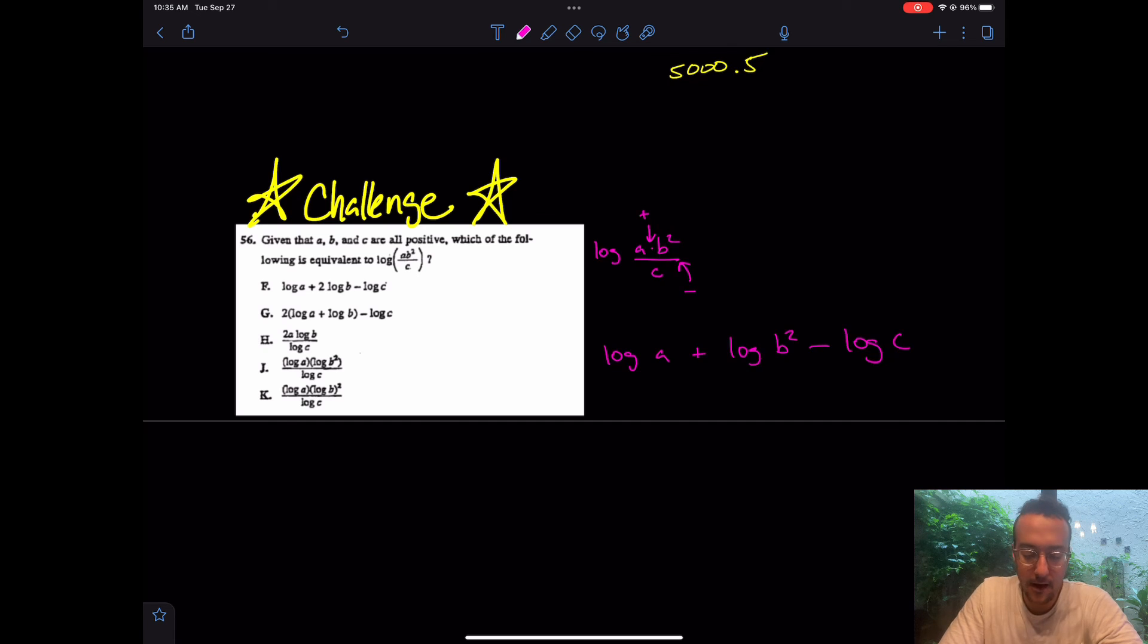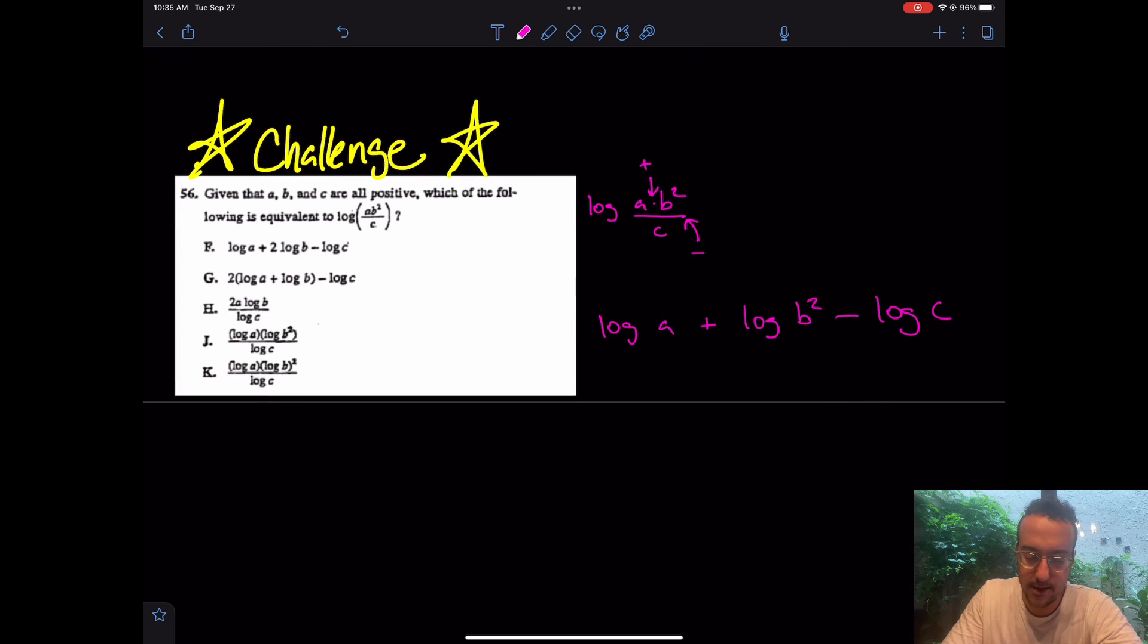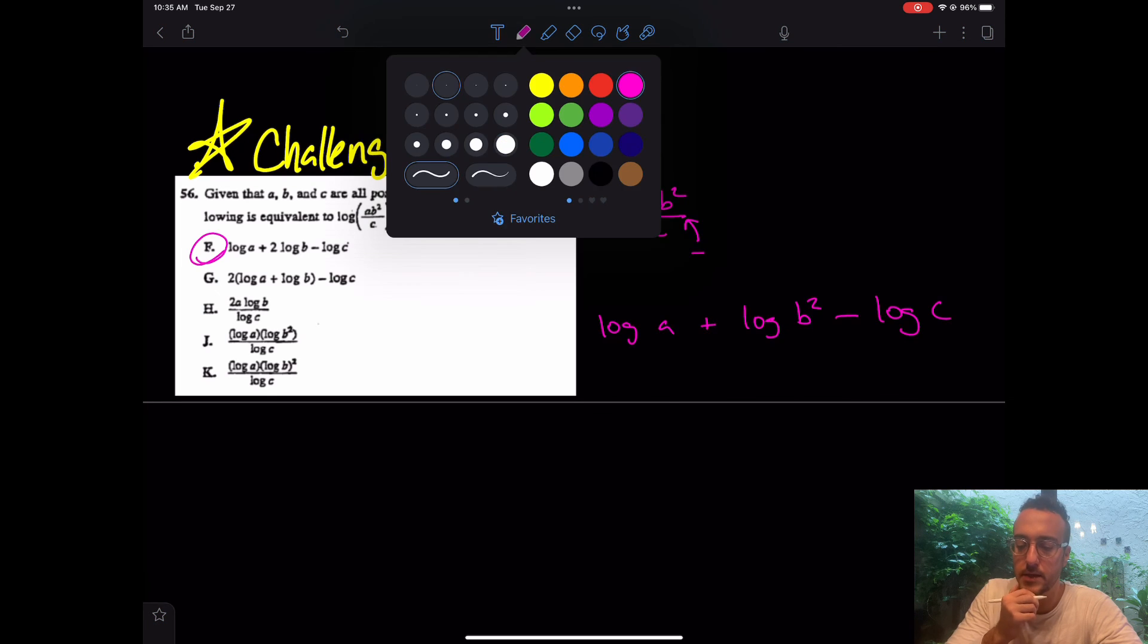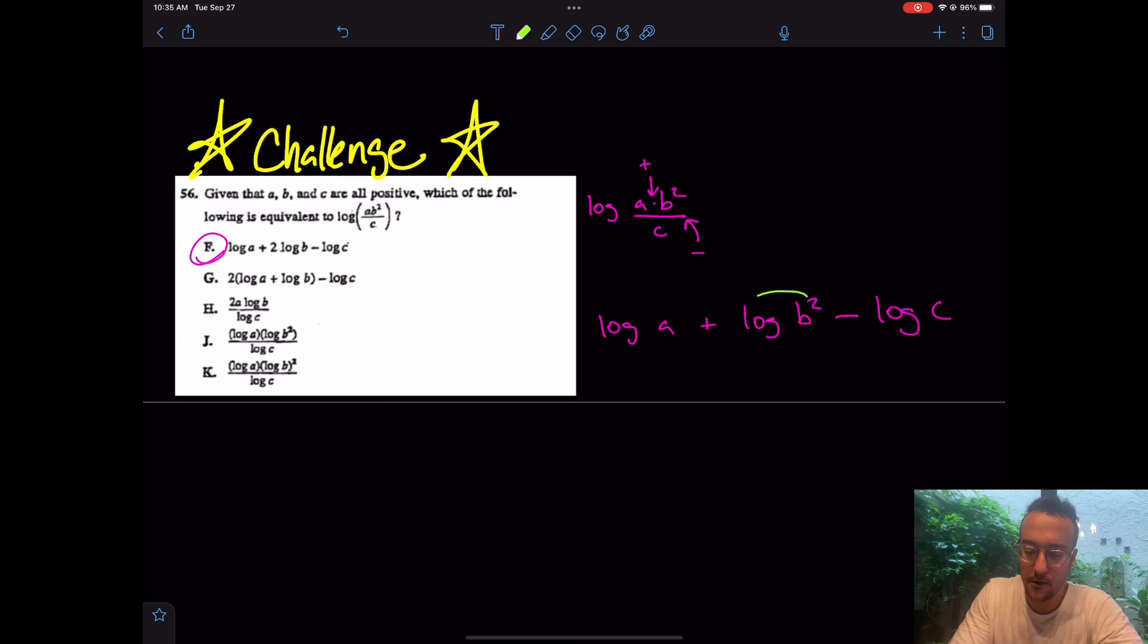And from here, I take a look at the answer choices. And unfortunately, my answer choices don't match up. But I don't panic because I know that I can get this question right. I notice that answer choice F looks really close. The only difference is they pulled that two to the ground floor. Really, I have log of A plus two log of B minus log of C. And my friends, that is the final answer. It is indeed F. And I was explaining that and it didn't even take me a minute.